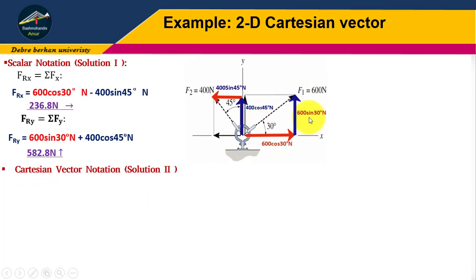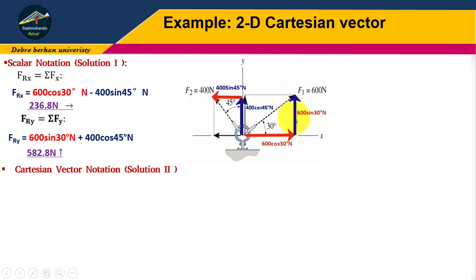For F1, which is inclined, the i component equals 600 cos 30 i, and the j component equals 600 sin 30 j.